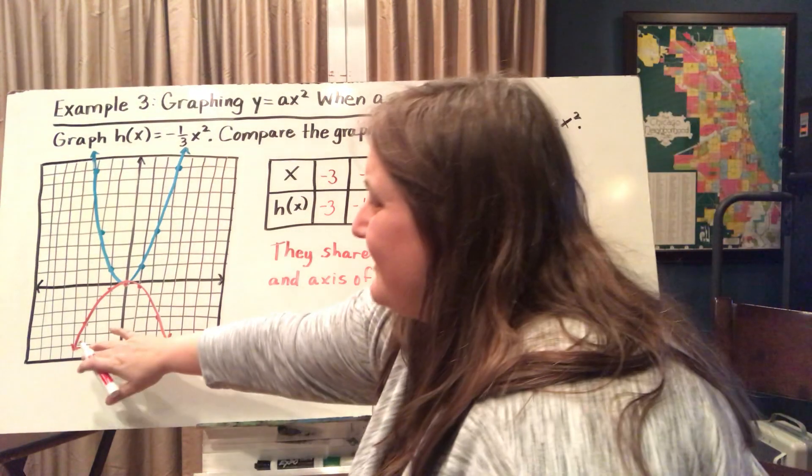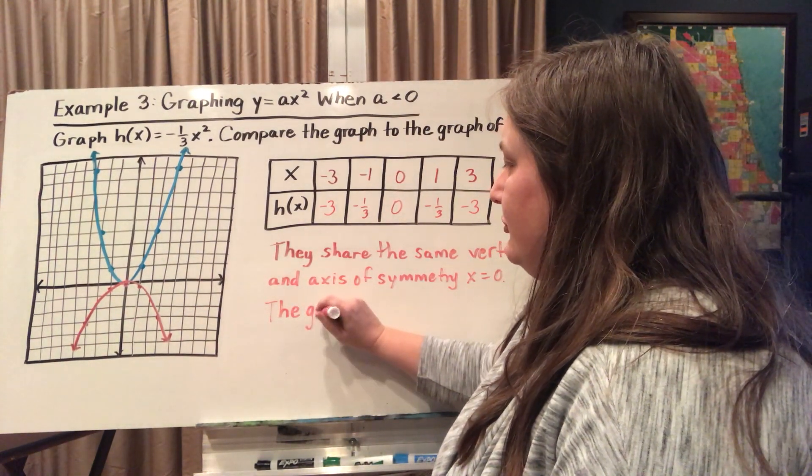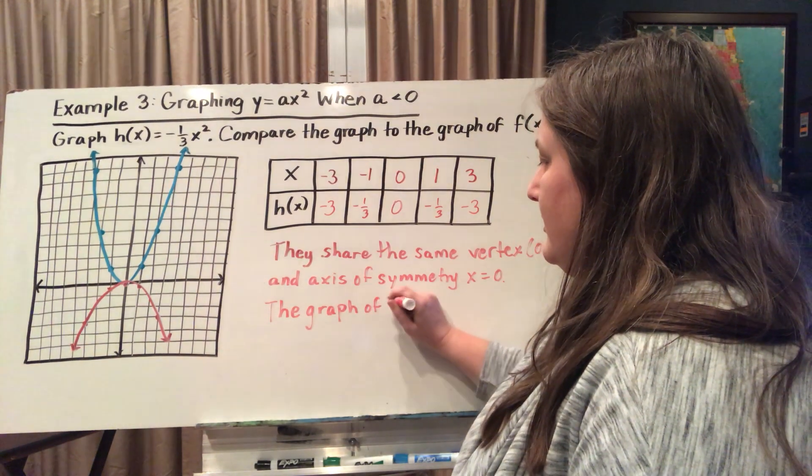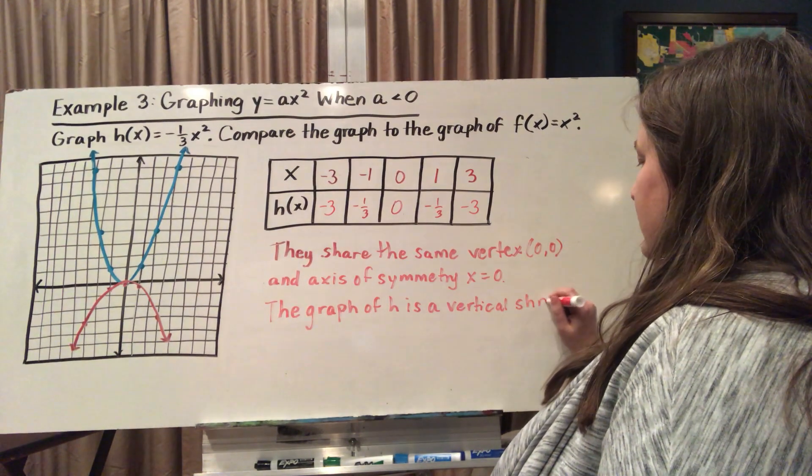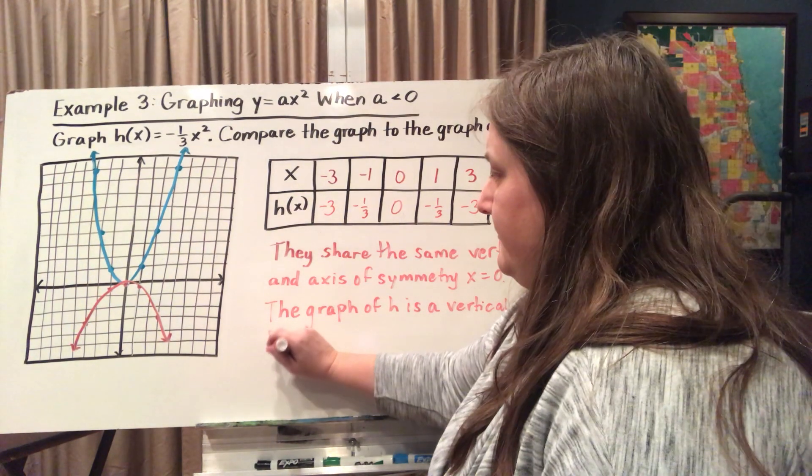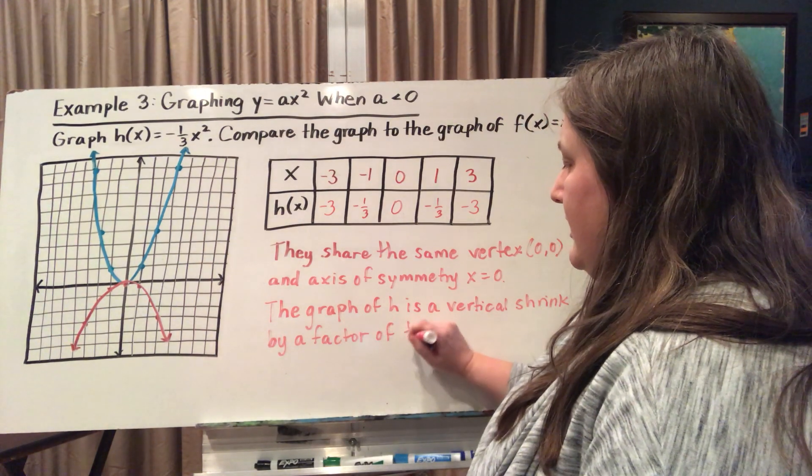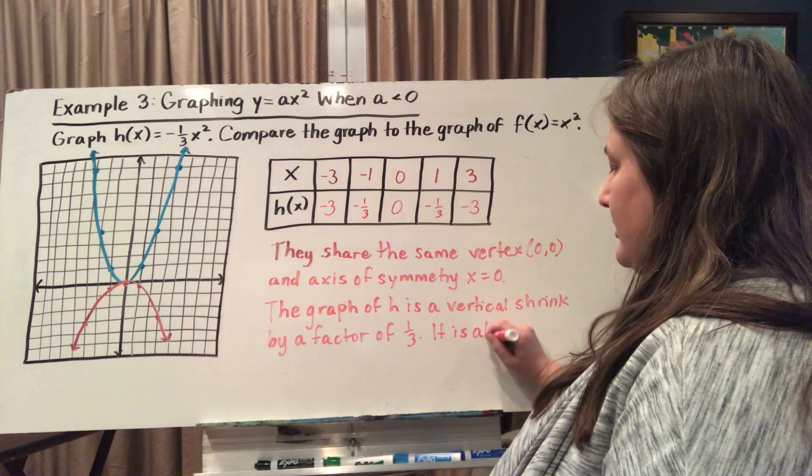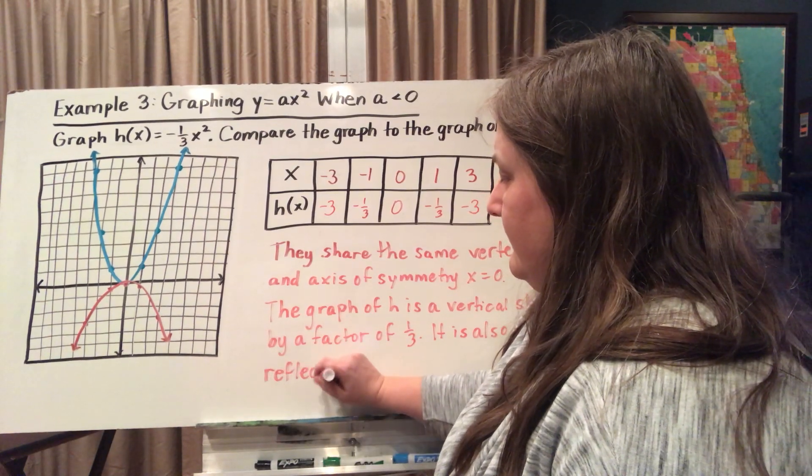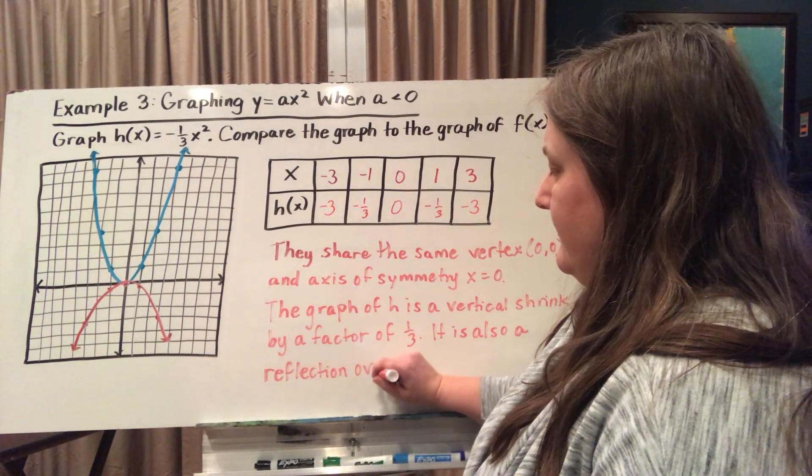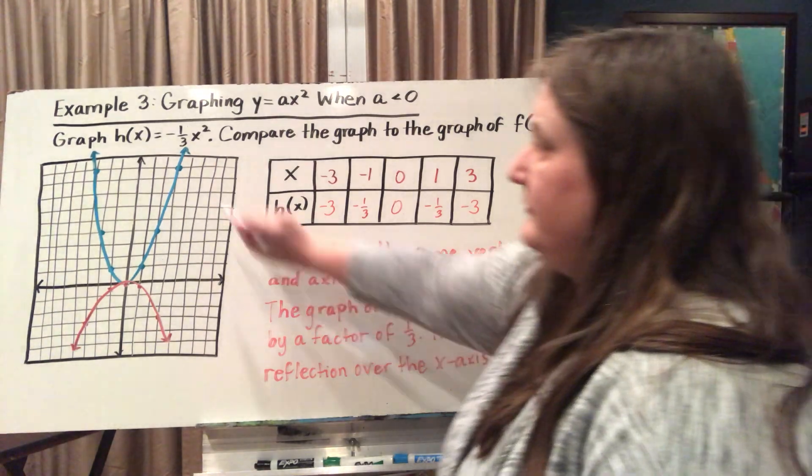I also noticed that this one is a little bit wider here. So the graph of h is actually a vertical shrink by a factor of one-third. It's also a reflection in the x-axis. The negative tells us that this is going to be a reflection, that negative right there.